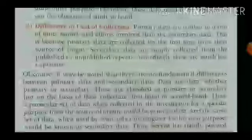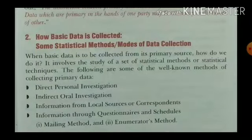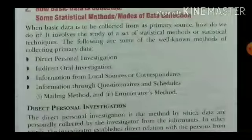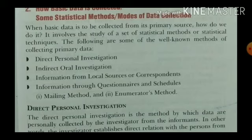Now, how is primary data collected? The different methods with the help of which data can be collected are: direct personal investigation, direct oral investigation, information from local source or correspondence, information through questionnaires and schedules — which includes the mailing method and the enumerators method. We will discuss each and every method in detail in our next video.